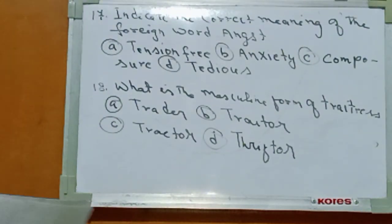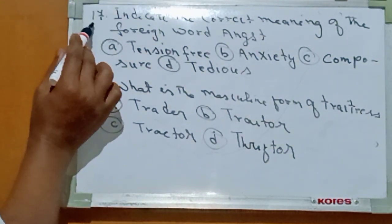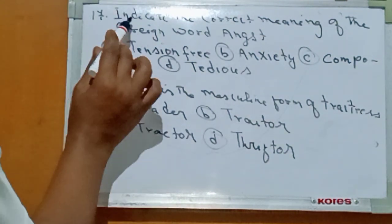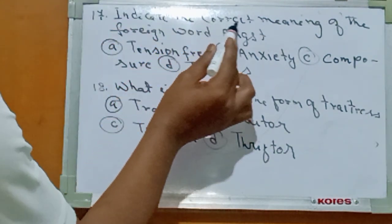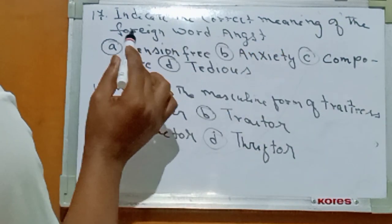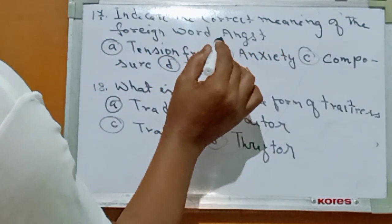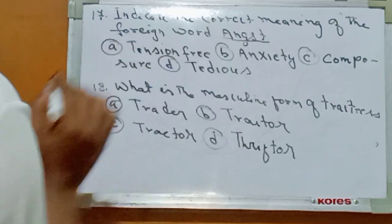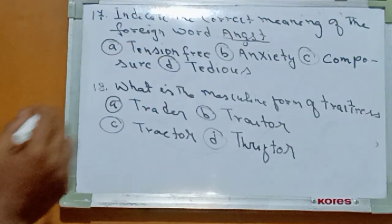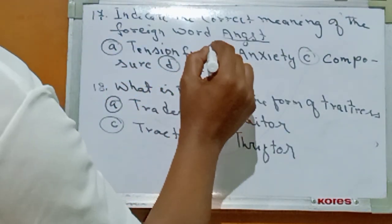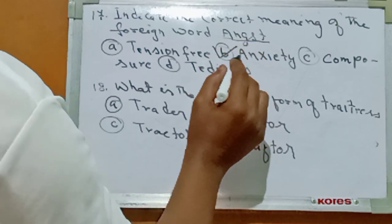Number seventeen: indicate the correct meaning of the foreign word angst. The right answer is Option B: anxiety — A-N-X-I-E-T-Y.